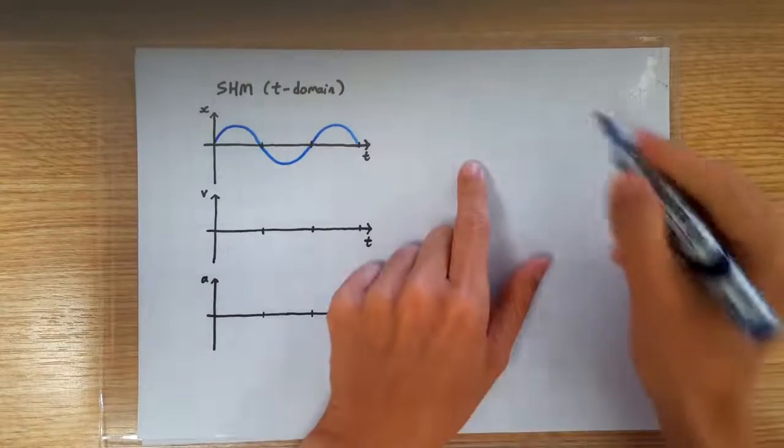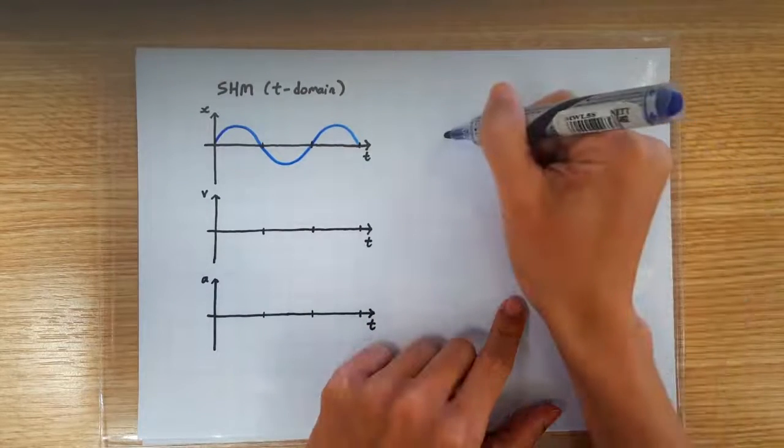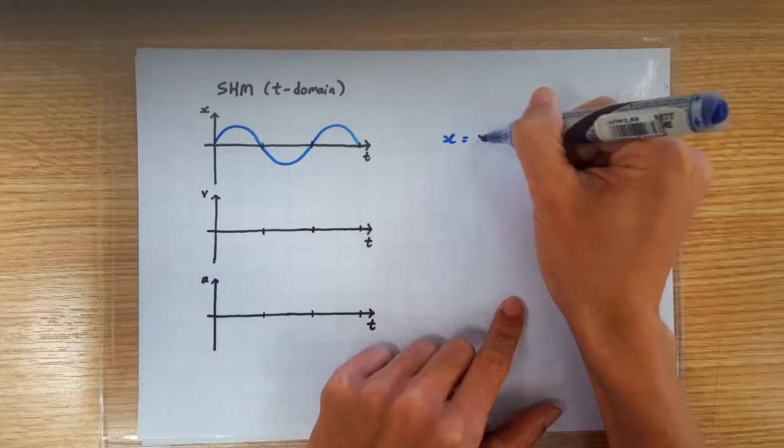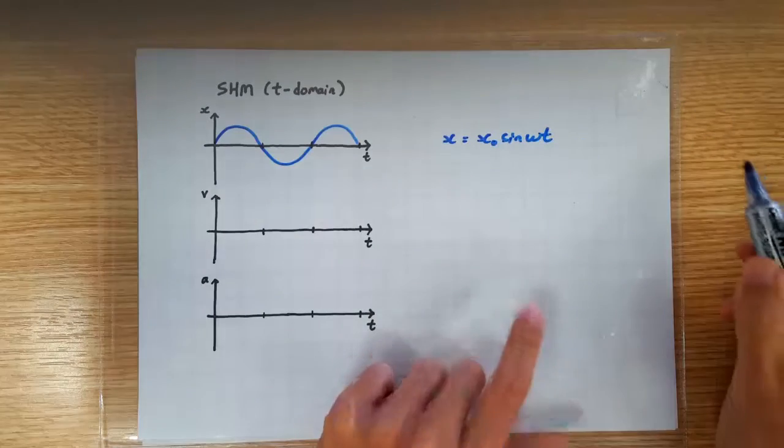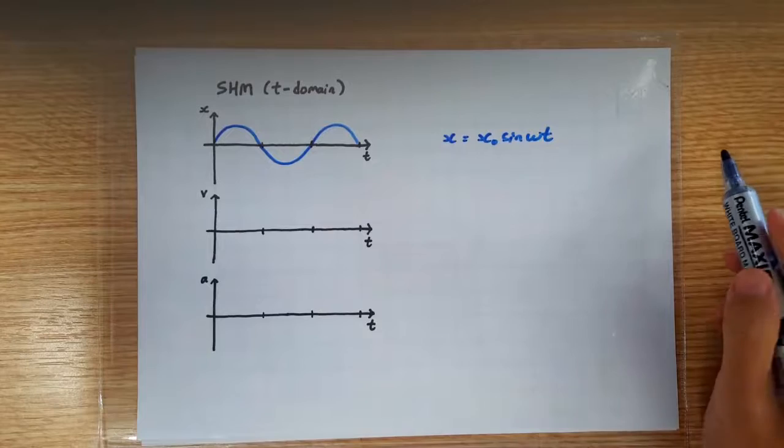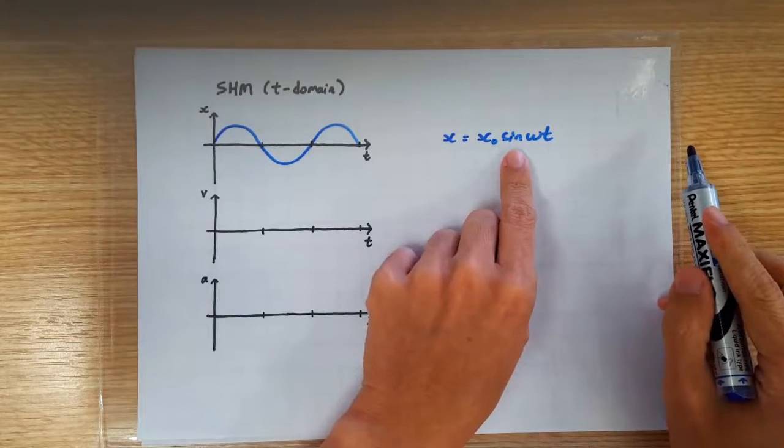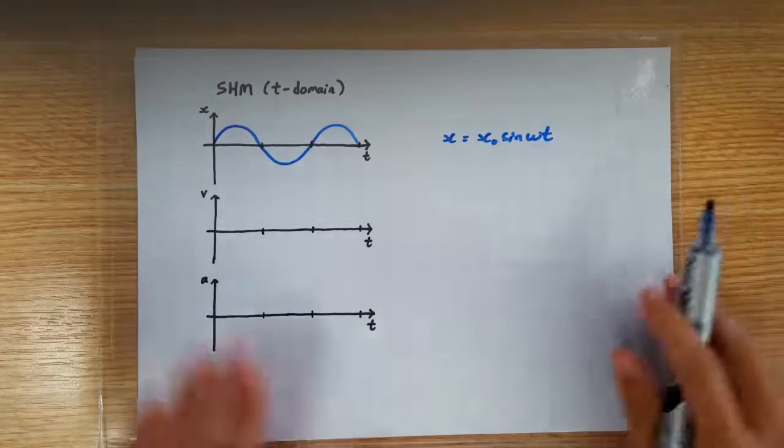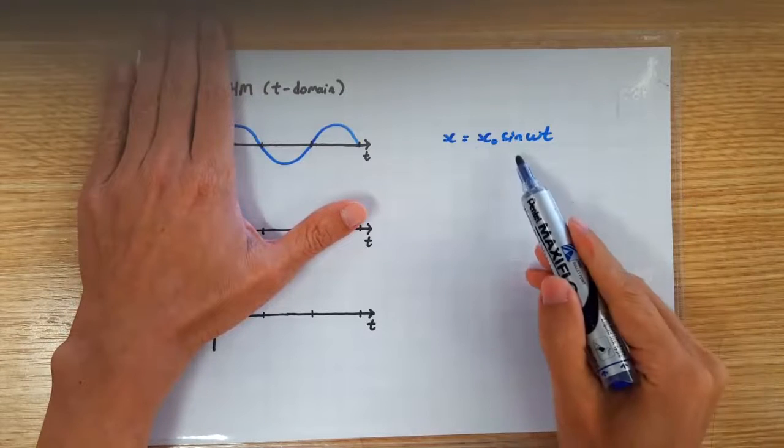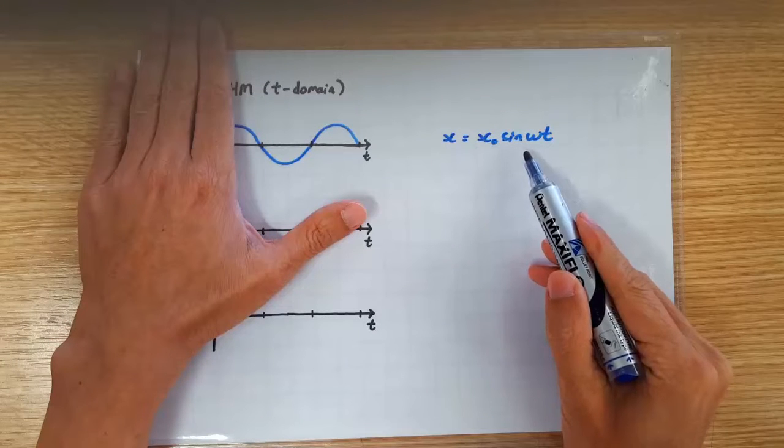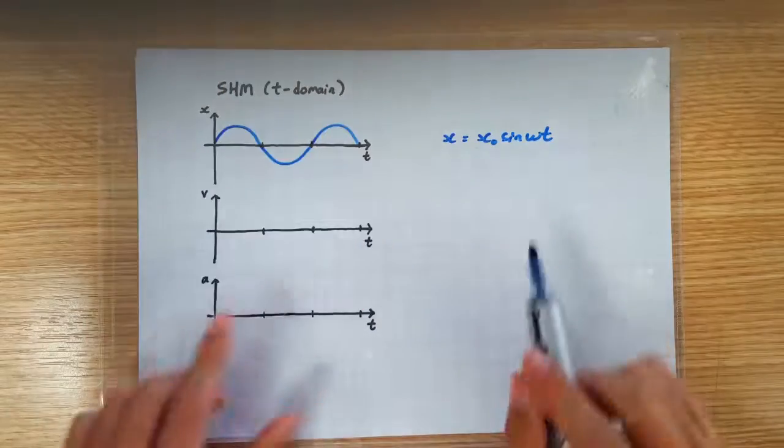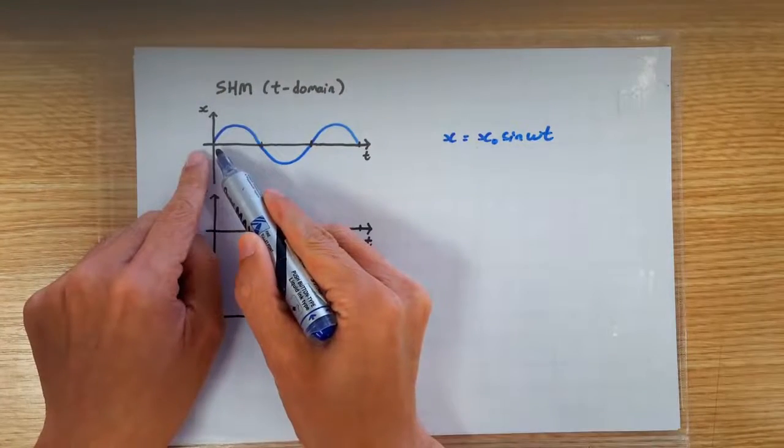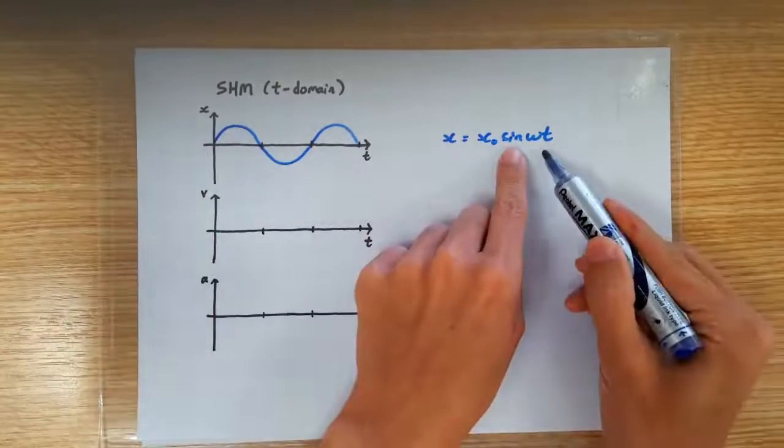The equation to describe this variation will be x equals to x0 sin ωt. Must it be sin? No. If we have started the graph from here, then it should have been cos. And we could have started the graph from anywhere. But because we have chosen to start the graph from here, that's why it's sin.